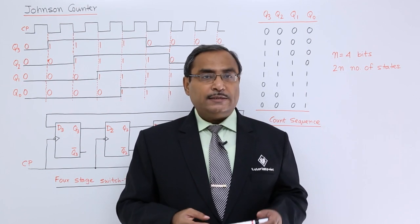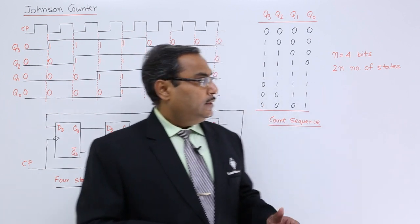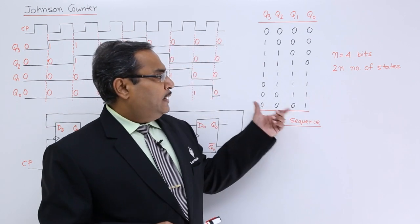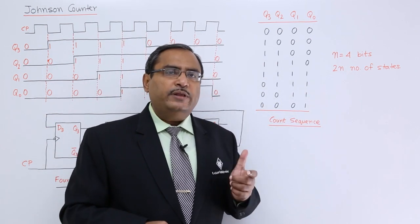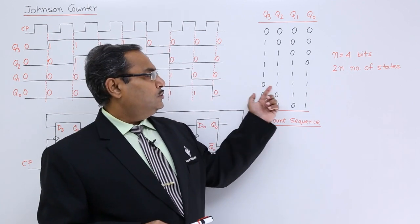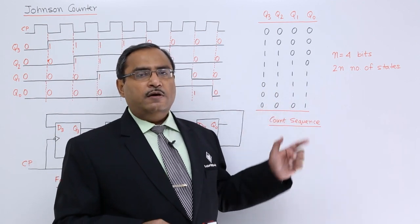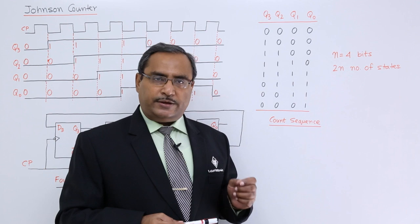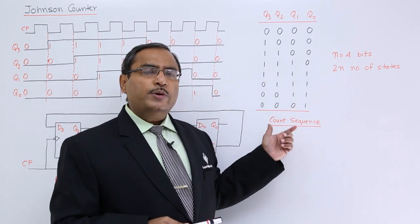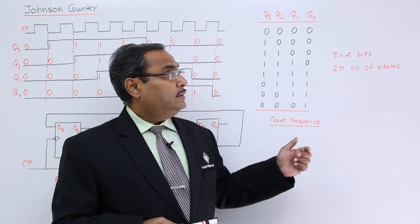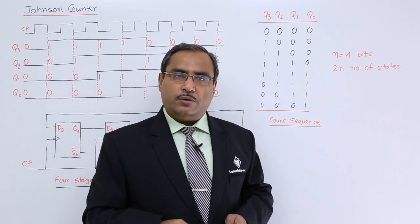Let us discuss what is the counting sequence of Johnson counter. Here the value of n is equal to 4 because we are dealing with a 4-bit Johnson counter, so we are having 4 bits for each and every counting state. That is why it will be having 2 into 4, that is 8 number of states in the Johnson counter.